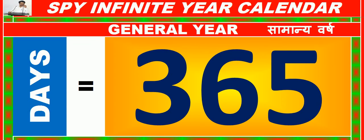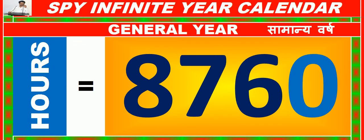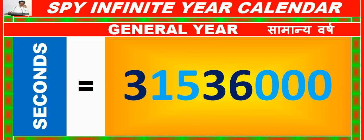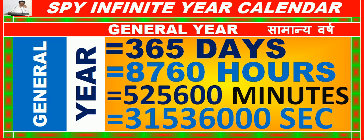A general year equals 365 days, or 8,760 hours, or 5,25,600 minutes, or 3 crore 15,36,000 seconds.